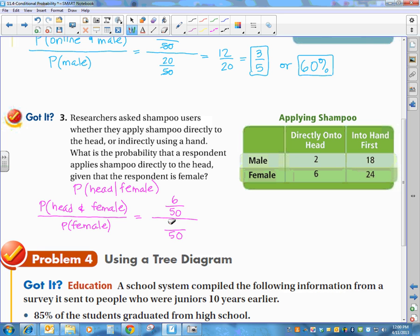We have 6 over 30, which is 1 over 5. Acceptable answer. If you want to change it to a percent, you can do so.